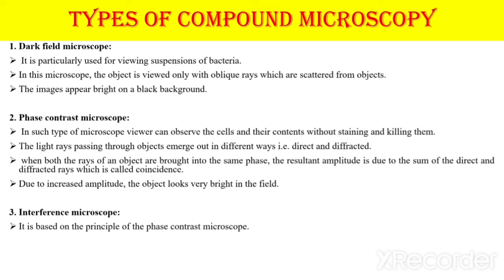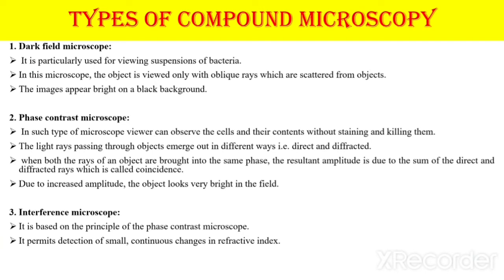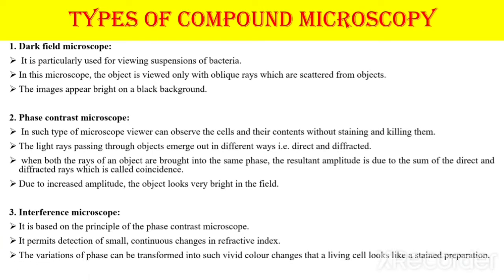The third type is the interference microscope, which is based on the principle of phase contrast microscopy. It permits detection of small continuous changes in refractive index, and this variation of phase can be transformed into vivid color changes so that living cells look like a stained preparation. So the three types are dark field, phase contrast, and interference microscope.